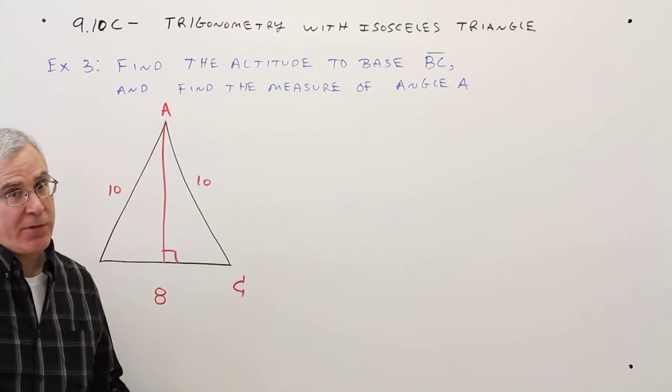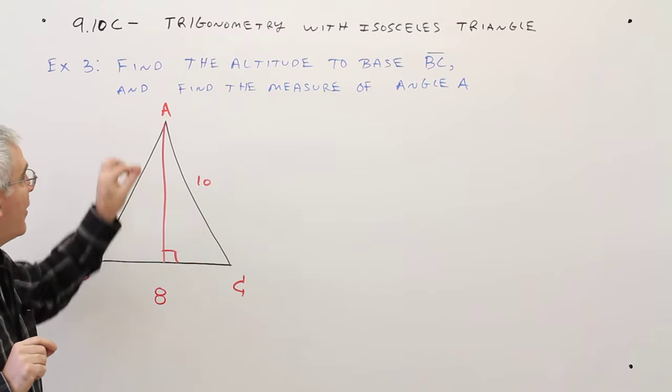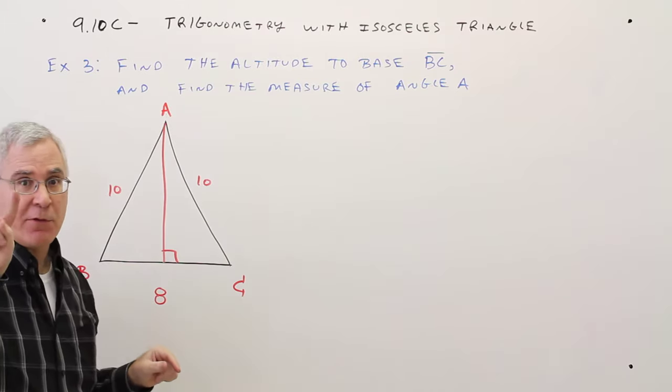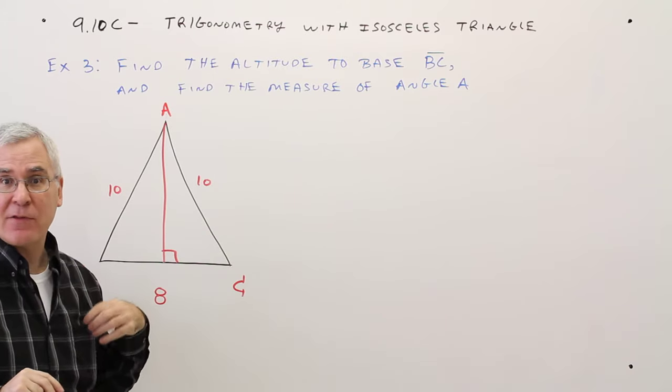You need to remember this, it comes up time and time again. Whenever you have an Isosceles Triangle and you draw an altitude from the vertex angle, it does two things. It bisects the opposite side, and it bisects the vertex angle.